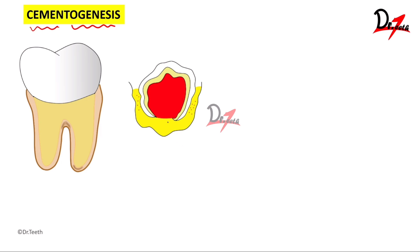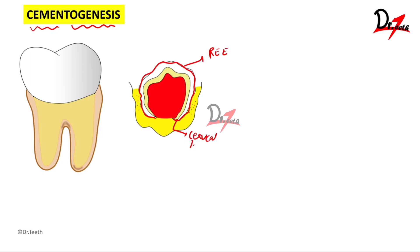While enamel formation has occurred, the enamel is covered by a layer termed the reduced enamel epithelium. In the cervical area, the reduced enamel epithelium forms a loop called the cervical loop. This cervical loop is very important as it is the foundation for the developing root, the root dentin, as well as the cementum.